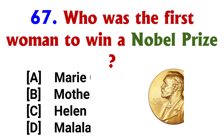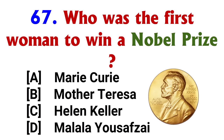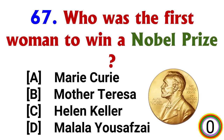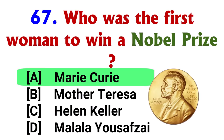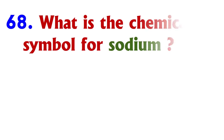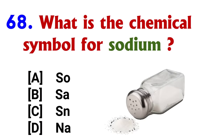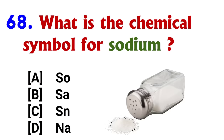Who was the first woman to win a Nobel Prize? Answer: option A, Marie Curie. What is the chemical symbol for sodium? Answer: option D, Na.